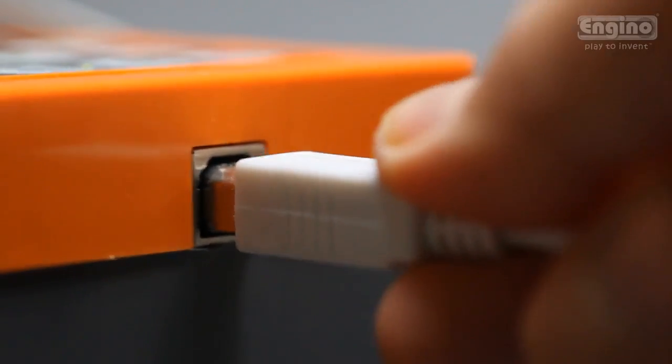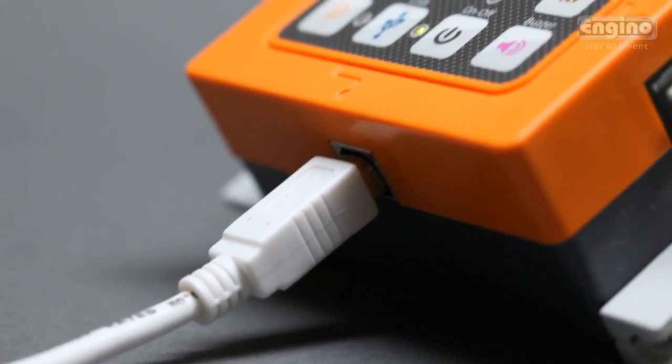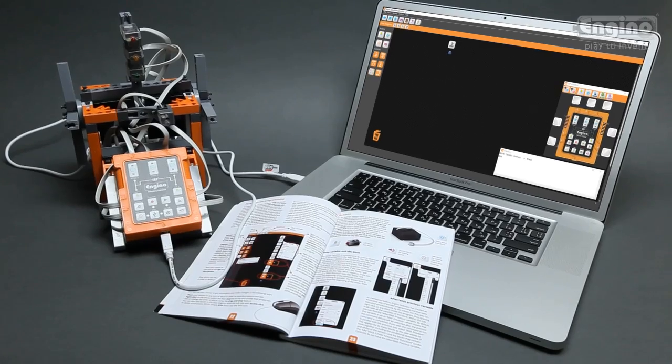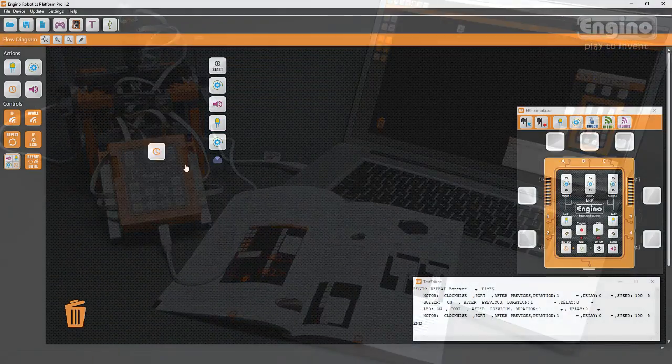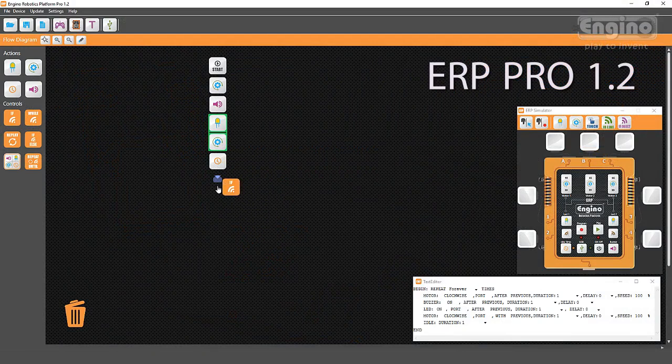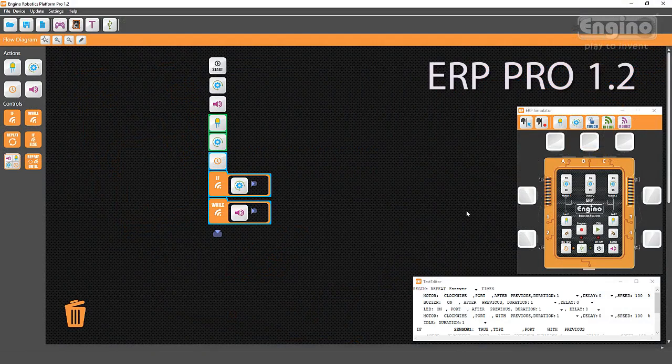Connect the controller with a PC through the USB cable. Use the ERP programming software to create complex programs. The proprietary software consists of a friendly user interface that maximizes interaction. It allows three levels of programming, from simple to advanced.